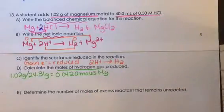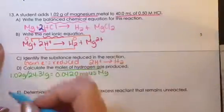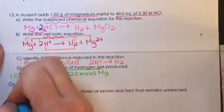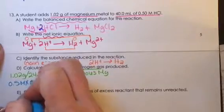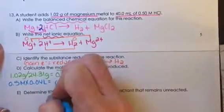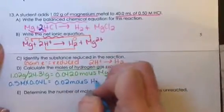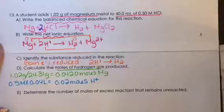For the hydrochloric acid, in order to get the moles, it's molarity times volume, so 0.5 molar times 0.04 liters, which is 0.02 moles of the hydrogen ion or the hydrochloric acid.